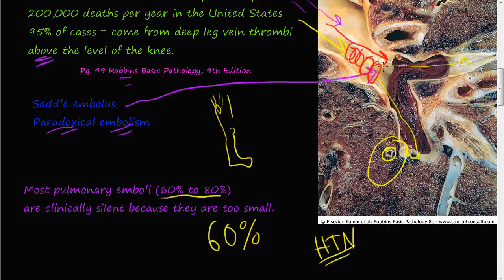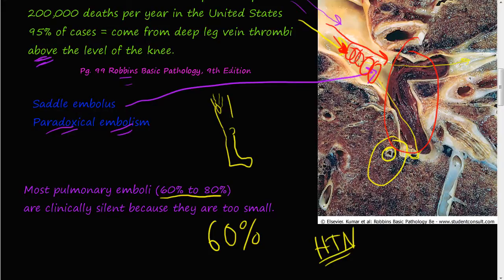Small emboli can accumulate and stack up in the pulmonary circulation, increasing resistance and causing pulmonary hypertension. Because they build up gradually, there may be no clinical symptoms — no difficulty breathing — until a critical threshold is reached. Additionally, people who have had pulmonary emboli or blood clots in the lungs are at higher risk of developing more.